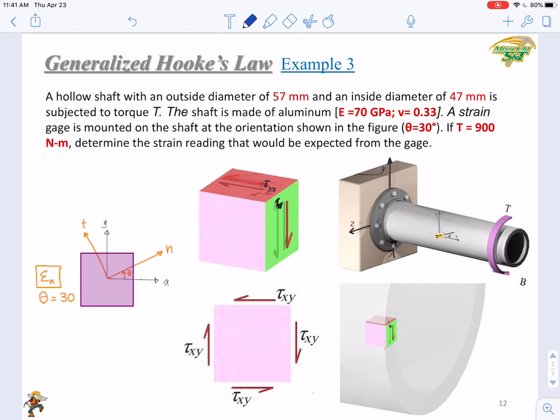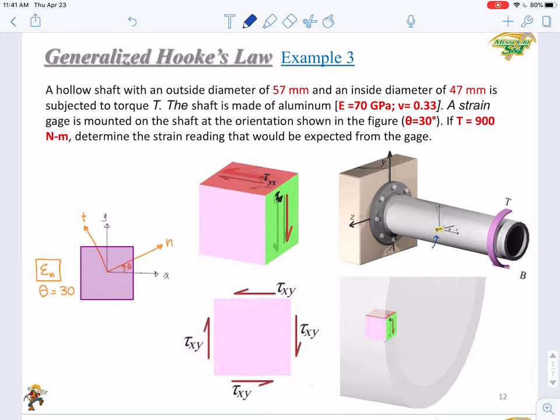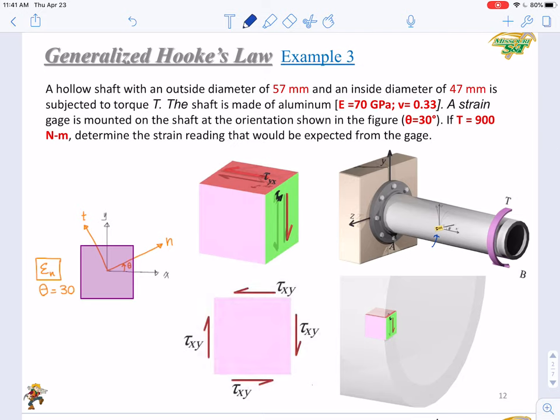So the gauge is right here. The X indicates the axial direction. Then the direction of concern is the direction N, which has a theta of 30 degrees with respect to X. This is a shaft subjected to a torque. Do you think there is a normal stress generated along X or Y direction? Do you think there are shear stresses? So you can separate a stress element on the external surface since the strain gauge is attached on the external surface.